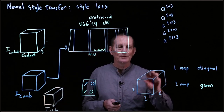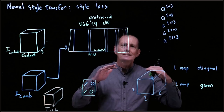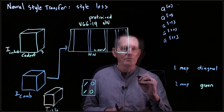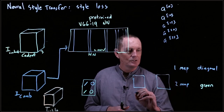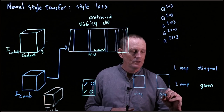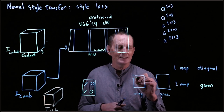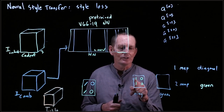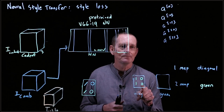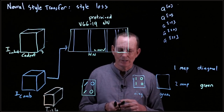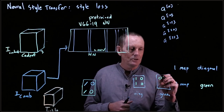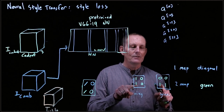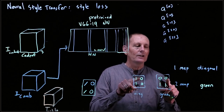Looking at this two-by-two-by-two output conceptually: we have diagonal lines in the left area. Flattening into two feature maps — one for diagonals, one for green — diagonals appear top-left and top-right but not bottom. For green, we get zero across the top and one across the bottom. So we have one case of green-and-diagonal, green-no-diagonal, diagonal-no-green, and no-diagonal-no-green.